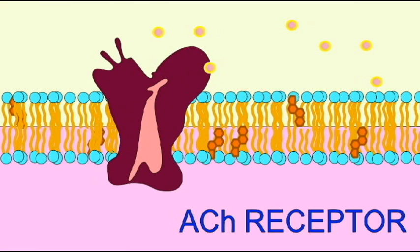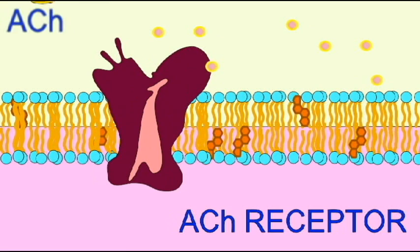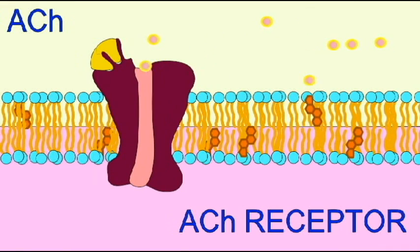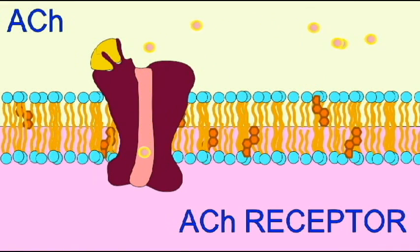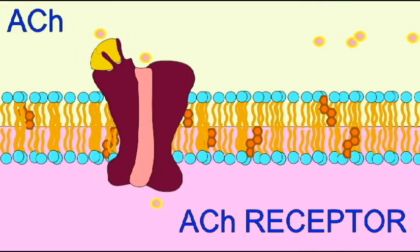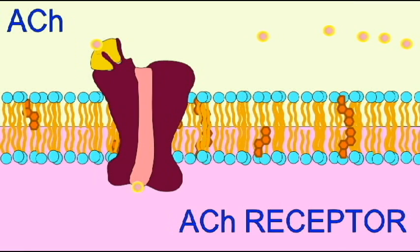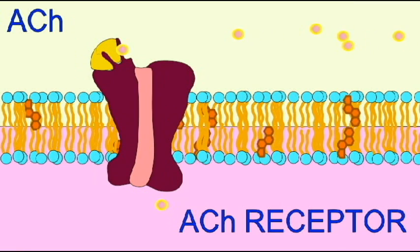When the action potential reaches the synaptic knobs, the influx of calcium ions causes the exocytosis of the vesicles of neurotransmitter. These neurotransmitter molecules then cross the synaptic cleft and can bind to receptors on the postsynaptic cell membrane.